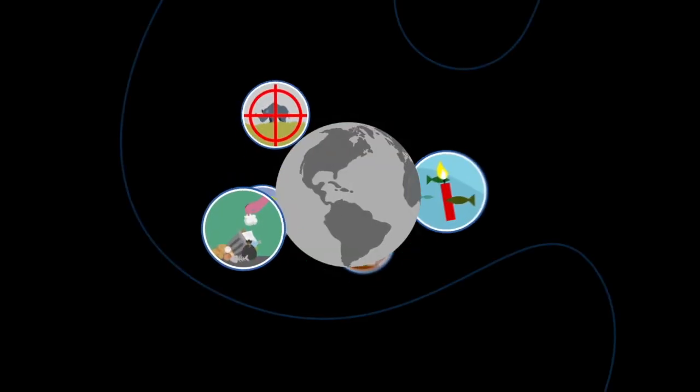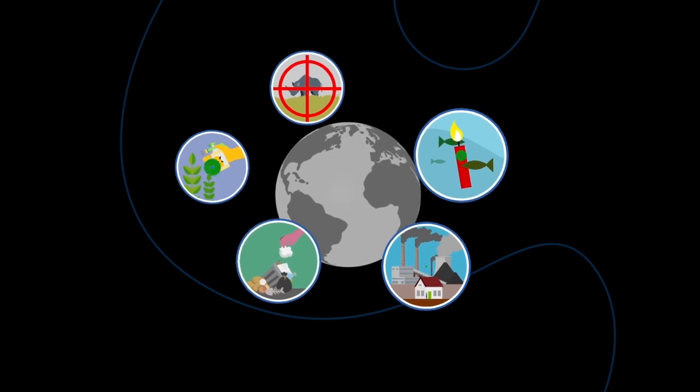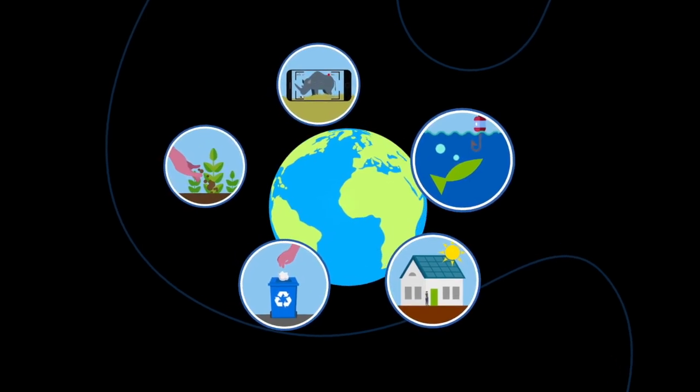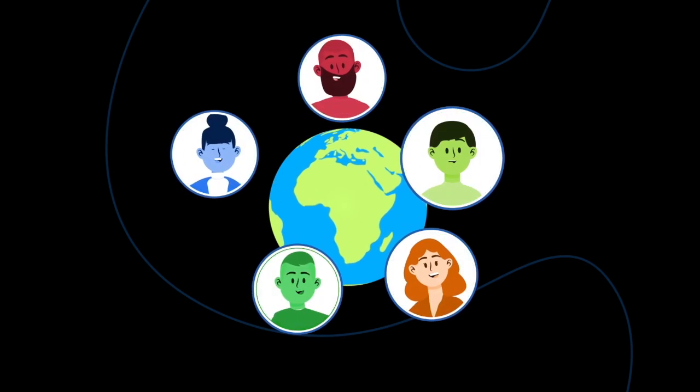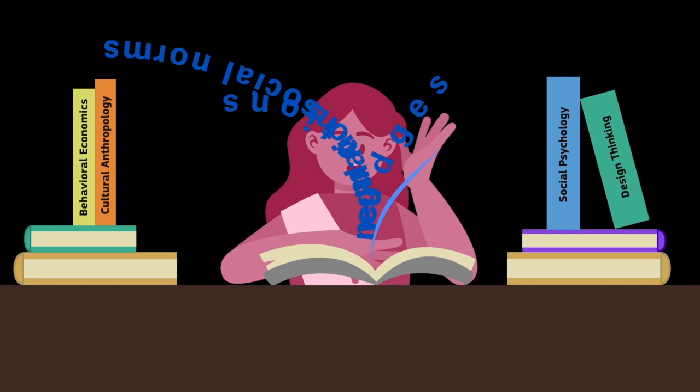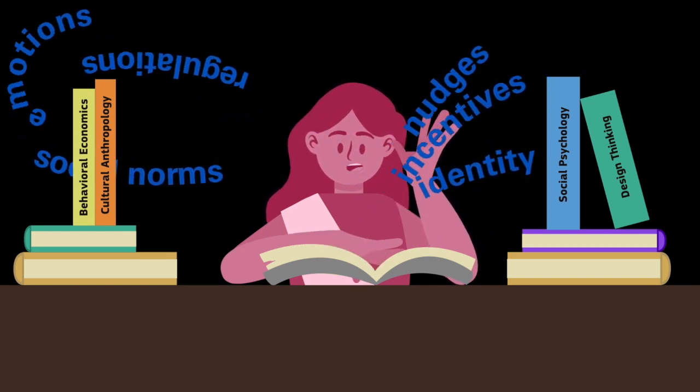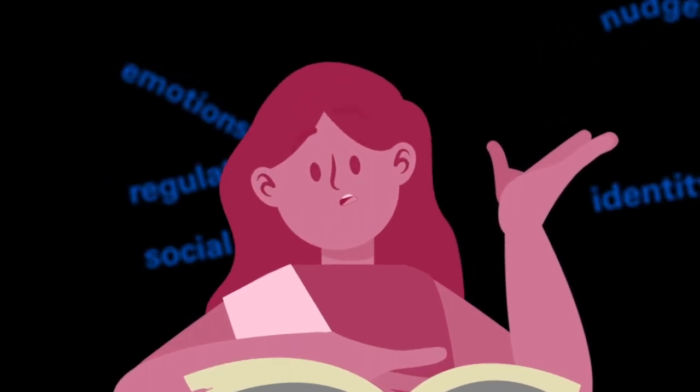Our biggest environmental challenges are behavioral challenges. So to address them, we need behavioral solutions. Understanding the science of human behavior and what influences people to change is important to develop something that works. Yet even with this knowledge, applying behavioral science in practice is another challenge. It can be overwhelming to know where to start.